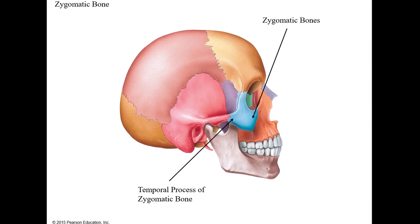The next two bones are the cheekbones, which form the anterior part of the cheek. The bone is called the zygomatic bone. One process to know is the temporal process of the zygomatic bone, which joins with the zygomatic process of the temporal bone - as covered in the cranial lab. We have two zygomatic bones.